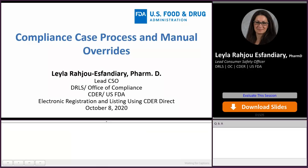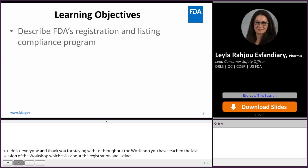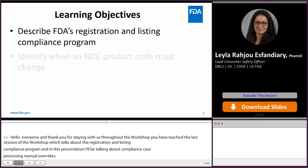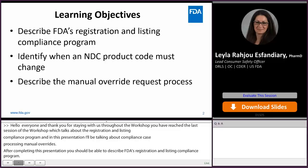Hello, everyone, and thank you for staying with us throughout the workshop. We have reached the last session, which talks about the registration and listing compliance program. In this presentation, I will be talking about compliance case process and manual overrides. After completing this presentation, you should be able to describe FDA's registration and listing compliance program, identify circumstances under which an NDC product code must be changed, and describe the manual override request process.